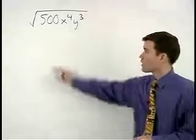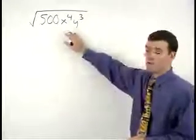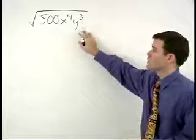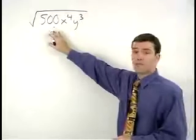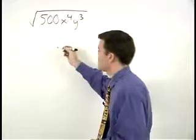To simplify the square root of 500 x to the fourth y to the third, we start by making a factor tree for 500.